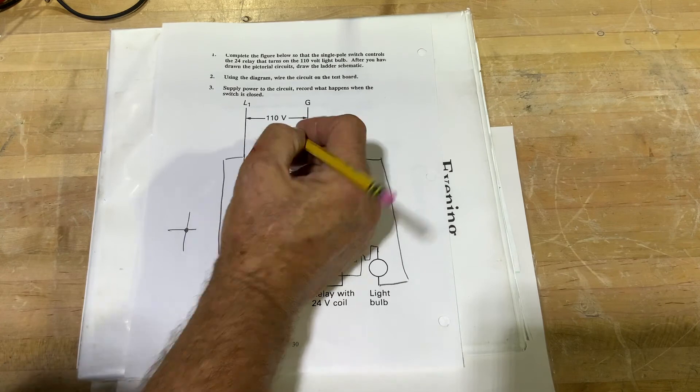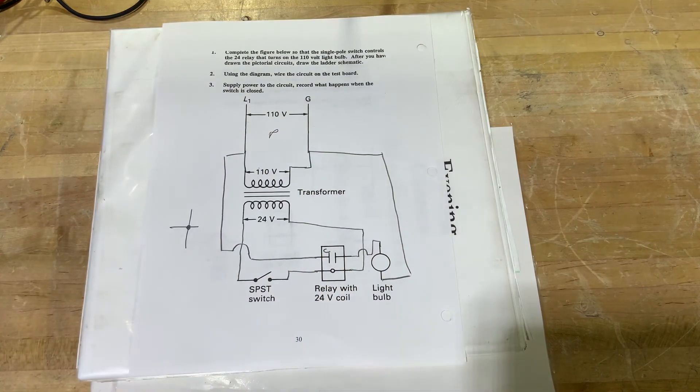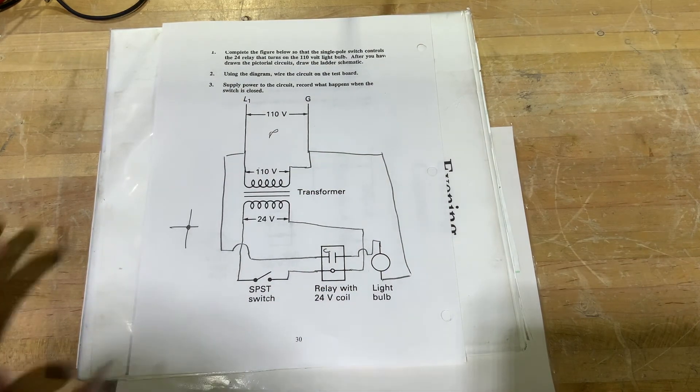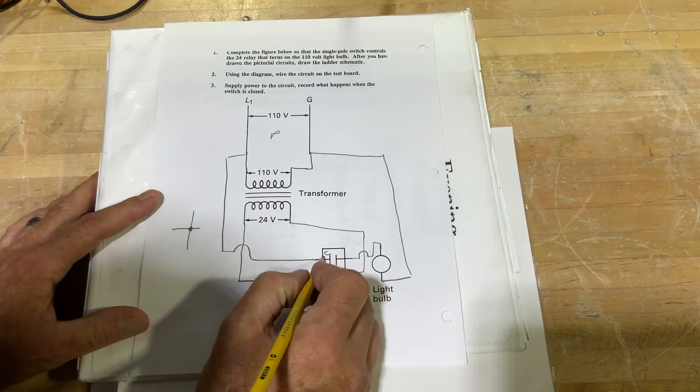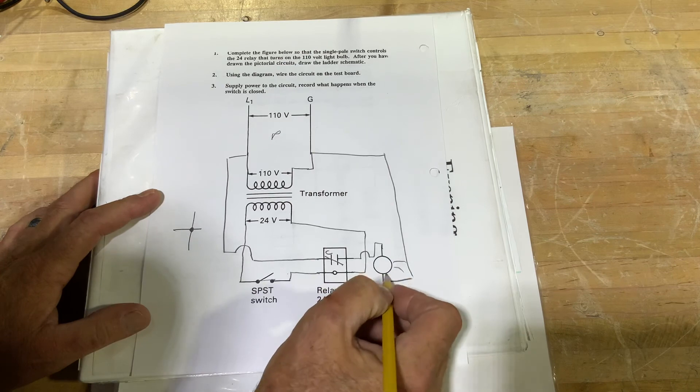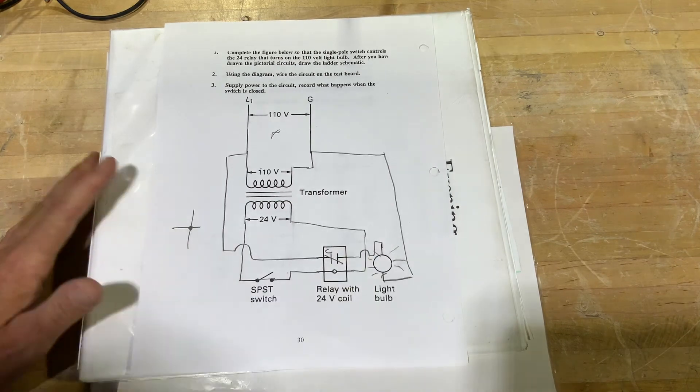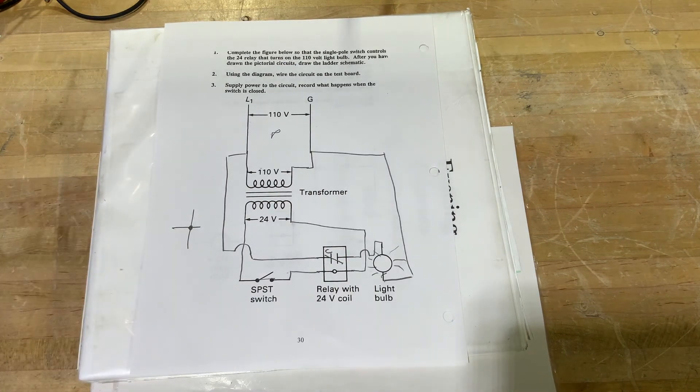So we're going to have our power up here, our control switch comes off of our 24 volt circuit. I close that switch, sends power to the coil, closes the set of contacts, your light bulb should come on.